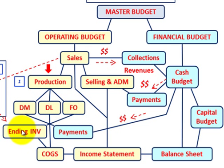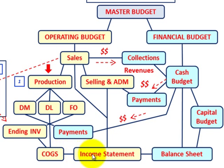We also have to know our ending inventories that are flowing out from our production, and then they go into the cost of goods sold for the units that we sell, and then our cost of goods sold goes into our income statement. And we do have that selling and administration budget here branching out from our sales budget.